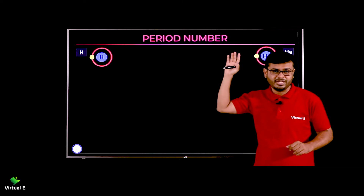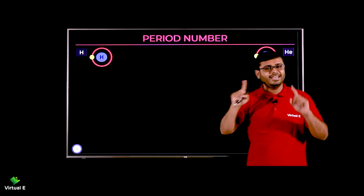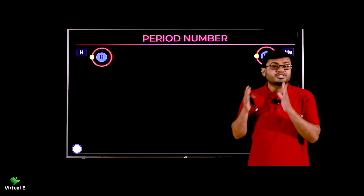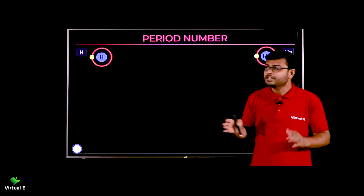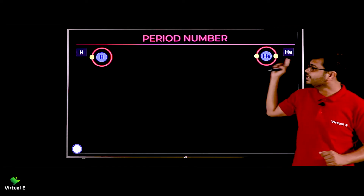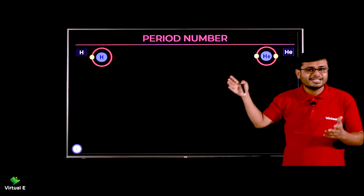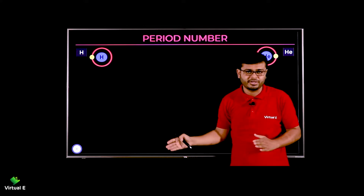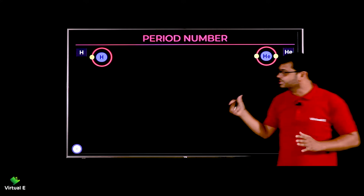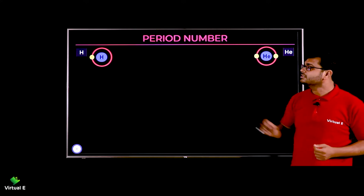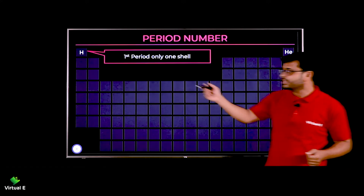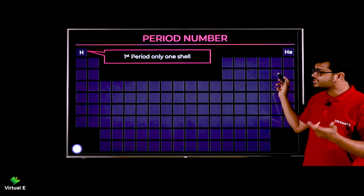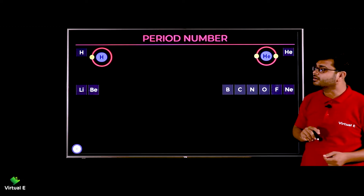In the first period, if you see, there is only one shell. So remember — jitne period honge utne shells rahenge. First period has only one shell. We can conclude: first period means only one shell — hydrogen and helium.